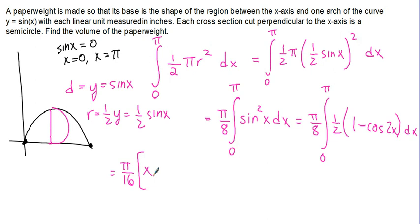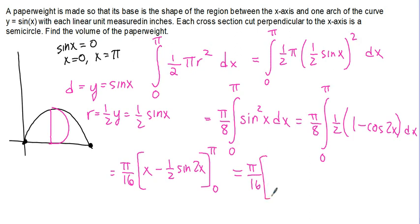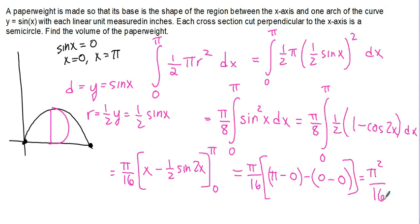Using a simple u-substitution, the integral of negative cosine 2X is negative one half sine of 2X. We evaluate from 0 to pi, so we have pi over 16 times: plugging in pi gives pi minus one half sine of 2pi — sine of 2pi is 0, so that's just pi. Minus plugging in 0: we get 0 minus one half of sine of 0, which is 0. So we end up with pi over 16 times pi, which gives us pi squared over 16. In this problem we were told the paperweight was measured in inches, so we have pi squared over 16 inches cubed. Don't forget your units.